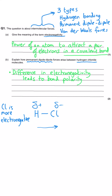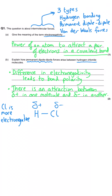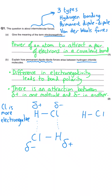That is the dipole described for the first mark. For the second mark, we need to say there is an attraction between the delta-positive hydrogen in one molecule and the delta-negative chlorine in an adjacent molecule. The diagram I've drawn in blue is not necessary for these two marks, but if a question says draw a diagram to show how this permanent dipole arises, you could draw this molecule attracted to an adjacent one.